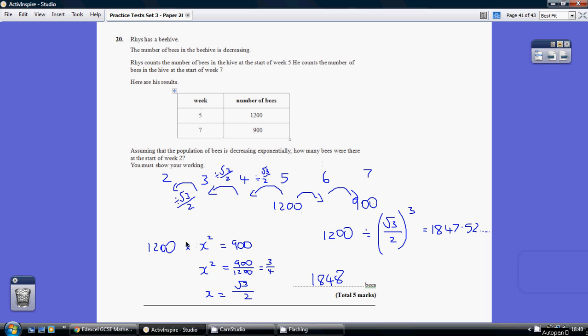Dividing both sides by 1,200, we get x squared being three quarters. Square root three quarters, we get x being root 3 over 2.